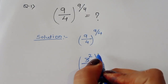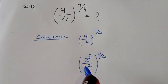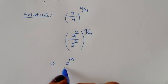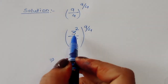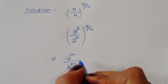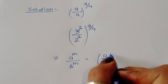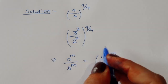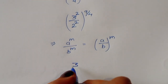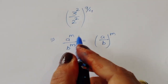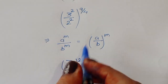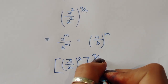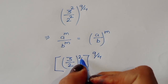To the whole power 9 by 4. Now we know one formula: if a^m divided by b^m is given, we can write this as (a/b) to the whole power m, because the power is the same. So we can write this as (3/2) to the power 2, to the whole power 9/4.